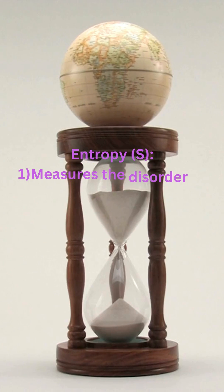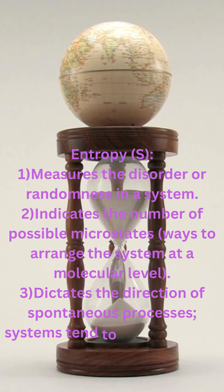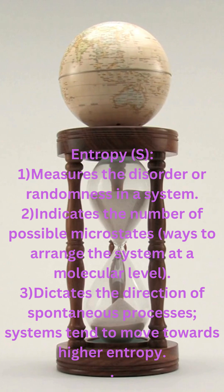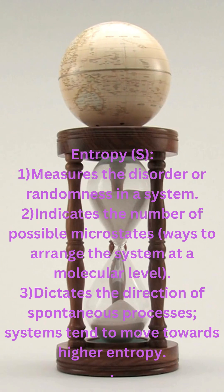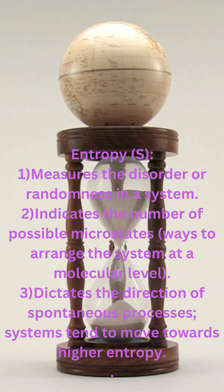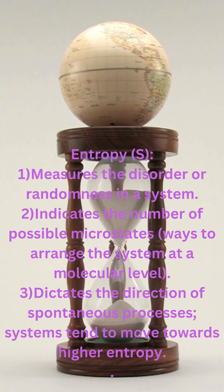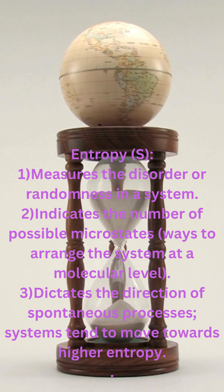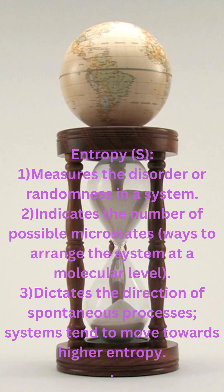Entropy (S): One, it measures the disorder or randomness in a system. Two, it indicates the number of possible microstates — ways to arrange the system at a molecular level. Three, it dictates the direction of spontaneous processes; systems tend to move towards higher entropy.